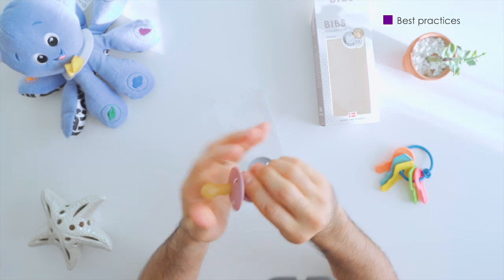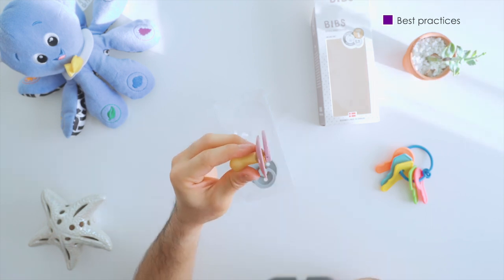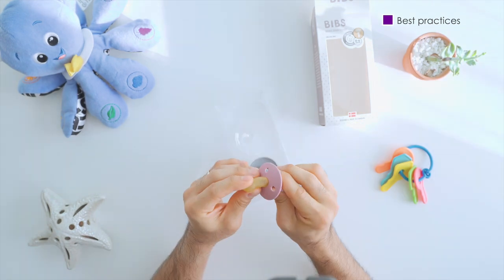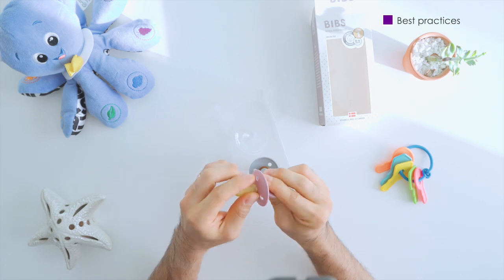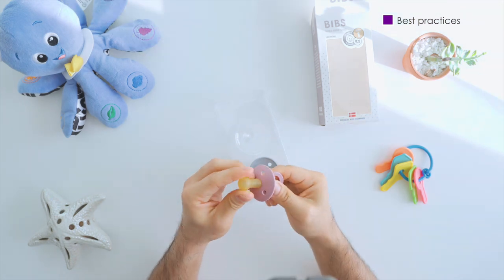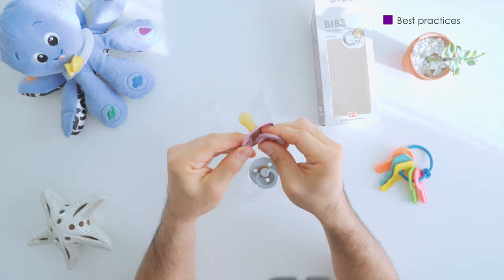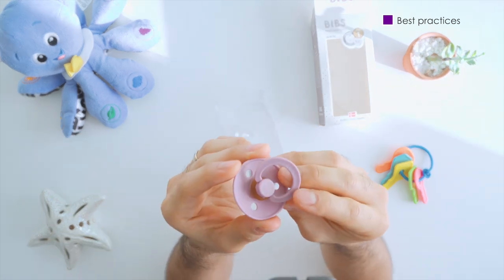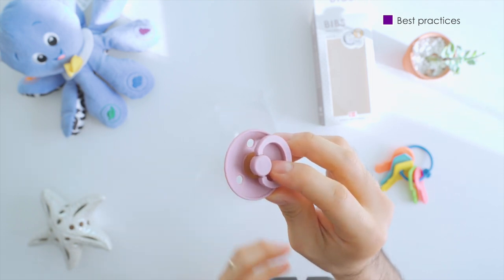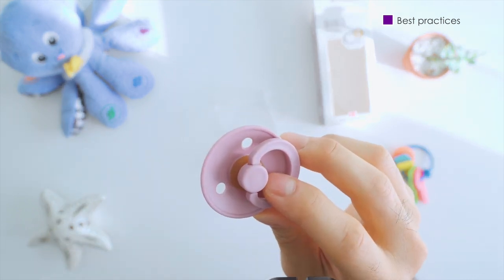Now with that said, make sure to check the pacifier before each use by looking at the base and tugging at it to make sure that the rubber material is in its proper shape. Discard it if there are any signs of damage or wear. And for babies with teeth, this will be especially crucial to check.